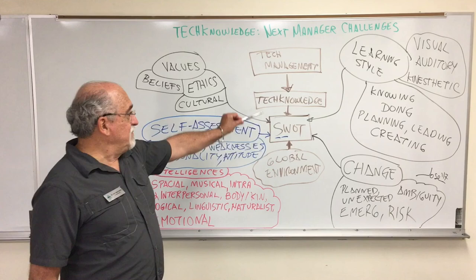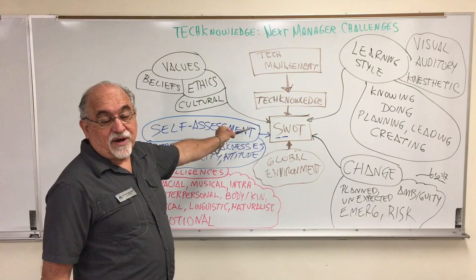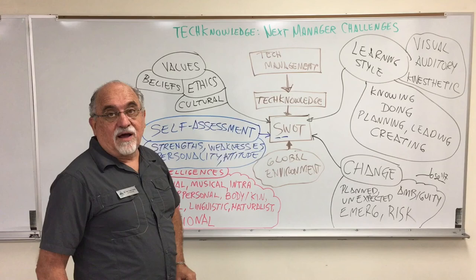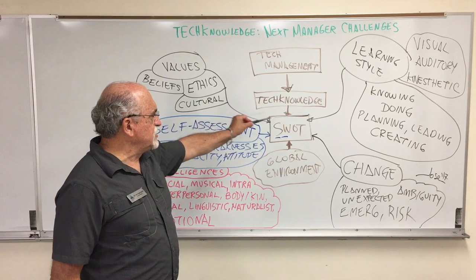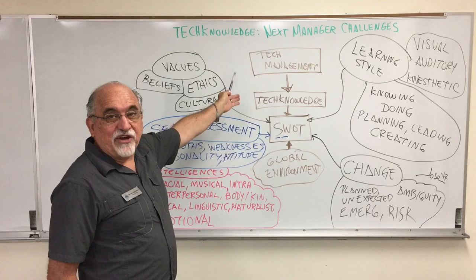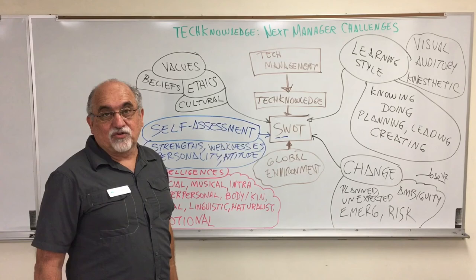We're going to start with the SWOT analysis, covering what we already mentioned in previous classes about the external environment, the internal environment, and how this global environment affects our organization. Then we add what I call tech knowledge — the combination of all technology knowledge, infrastructure, network, devices, and information that you're going to use in today's companies to ensure a successful organization.